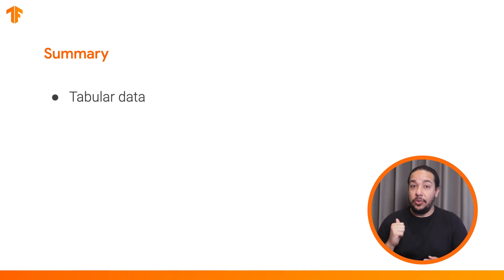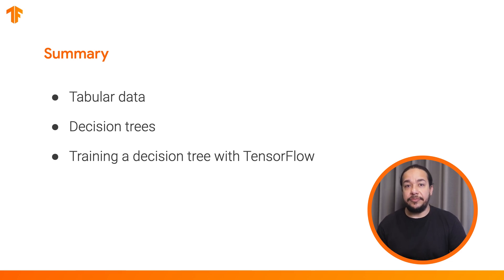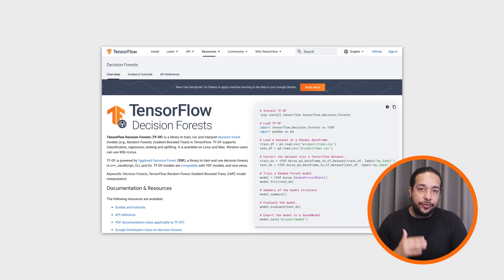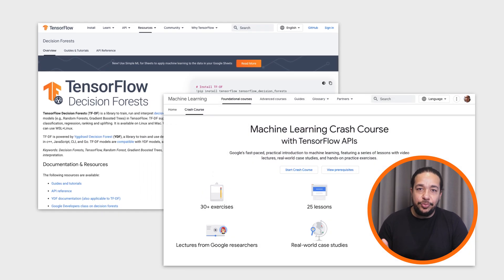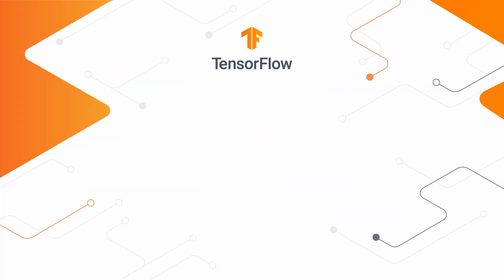Now you understand what tabular data is, what decision trees are, and how to train one on your own data. In the next videos, I will explain more powerful algorithms like random forests and gradient-boosted trees. You can check out the TensorFlow Decision Forests tutorials linked below to get started, or if you're ready to go all in on TFDF, take the course on the Google Developers website. Be sure to subscribe to the TensorFlow YouTube channel to be the first to know about more videos on TensorFlow Decision Forests and a ton of other awesome ML topics. Thanks for watching. We'll see you next time.